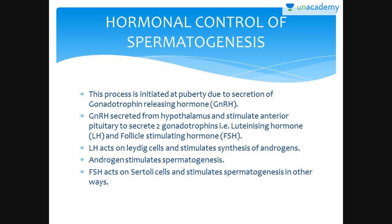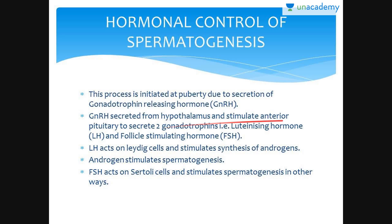Spermatogenesis is initiated at puberty due to secretion of gonadotrophin releasing hormone, also known as GnRH. This hormone is secreted from the hypothalamus and stimulates the anterior pituitary to secrete two gonadotrophins: LH and FSH.